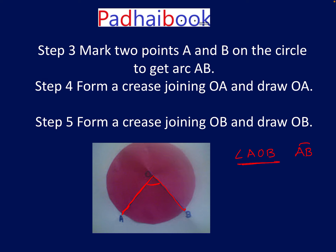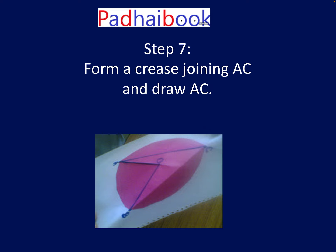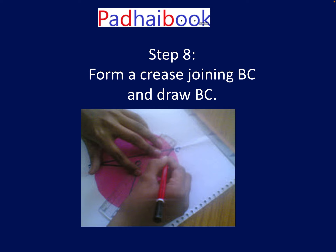Next, take any point C on the remaining part of the circle. Form a crease joining AC and similarly a crease joining BC, giving us angle ACB on the remaining part of the circle. So ultimately, angle AOB is the angle at the center of the circle and angle ACB is the angle at any point on the remaining part of the circle.